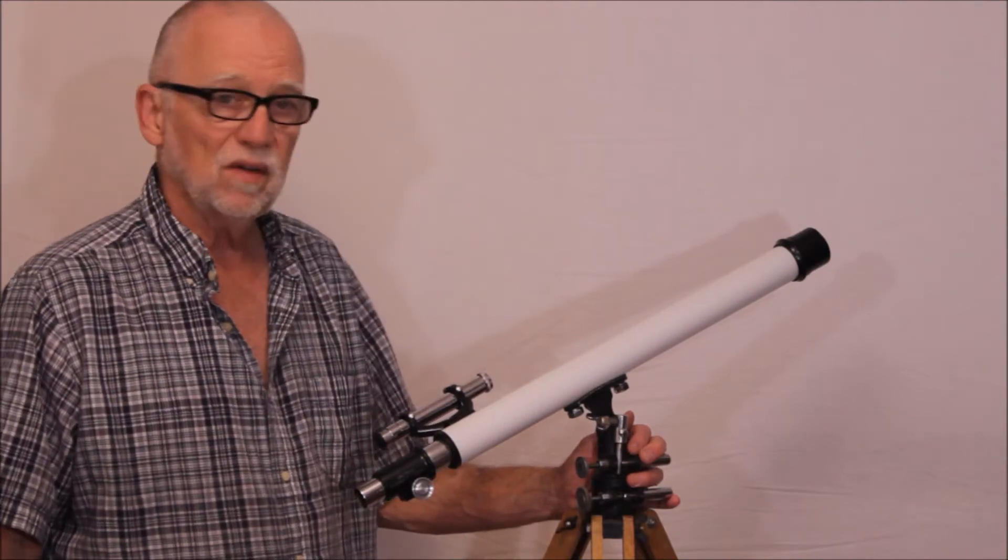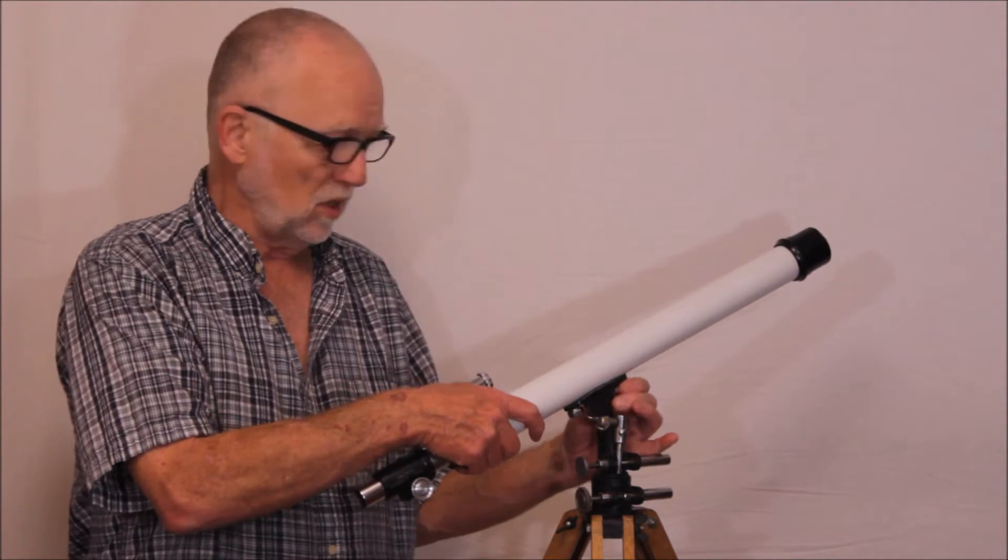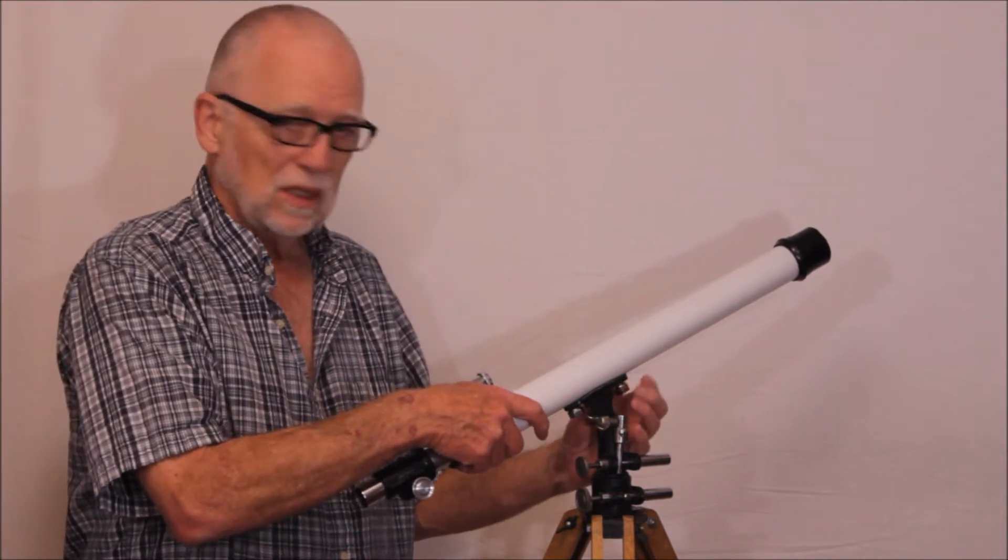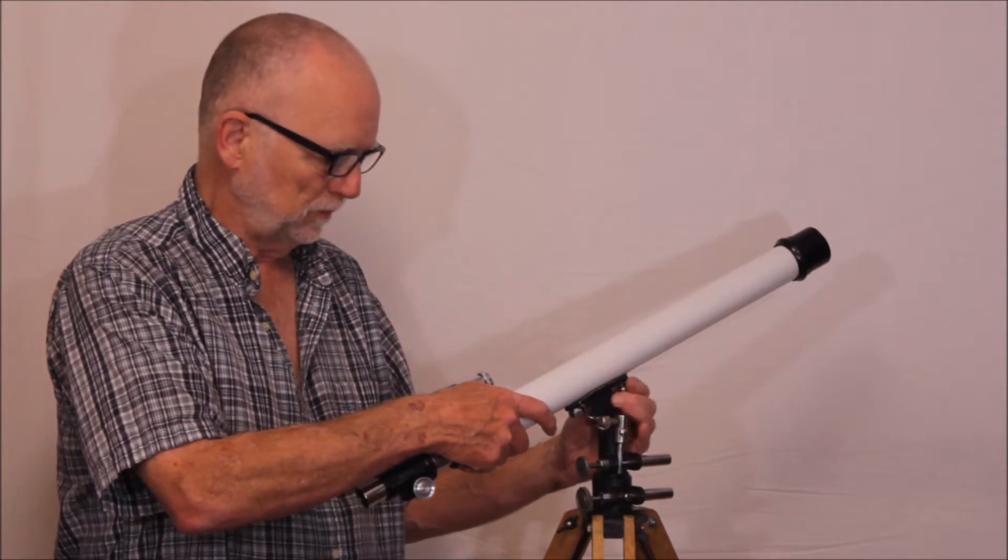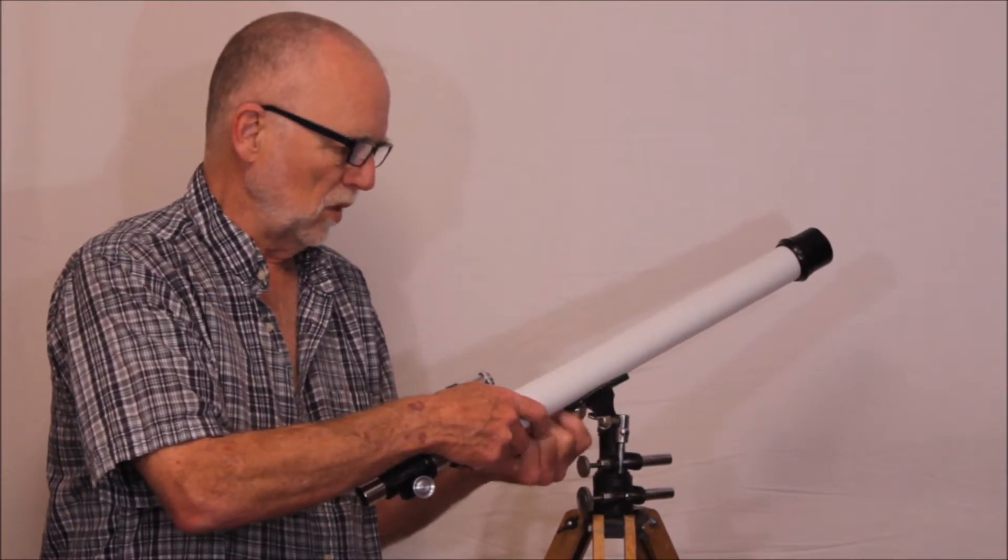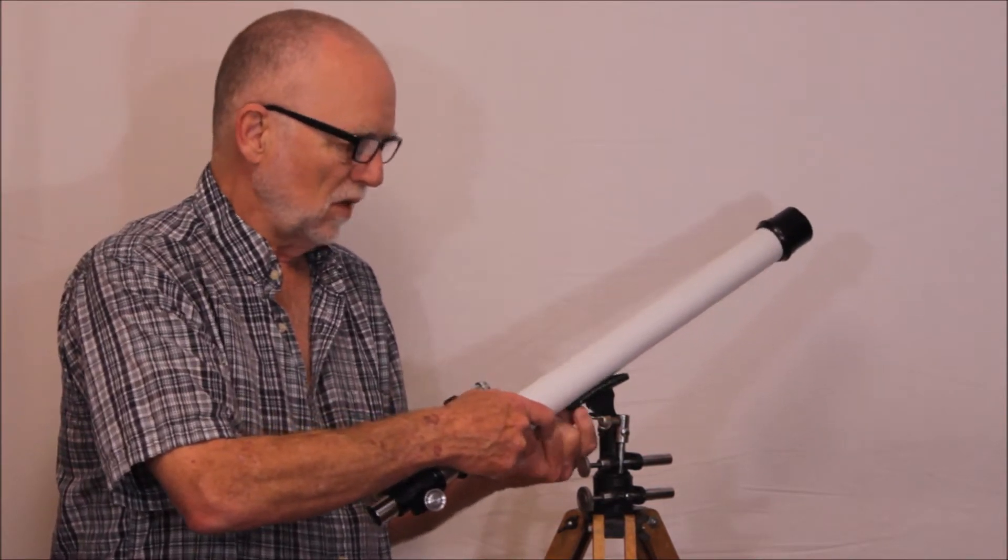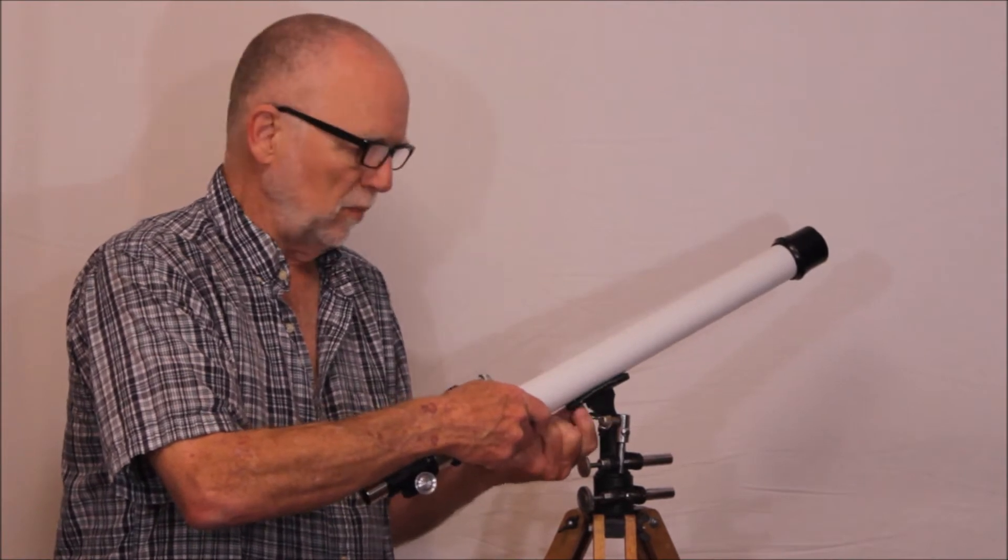This is the Unitron Model 127 and this is certainly one of the earliest ones you will ever see. I'm pretty sure this is probably the very first model introduced in the early 50s by Unitron. And the way I know that is several things. First of all, the mount is very primitive.